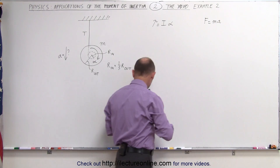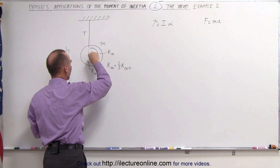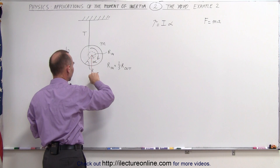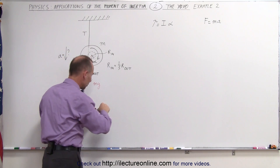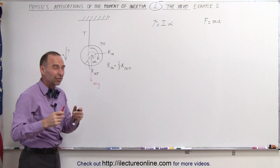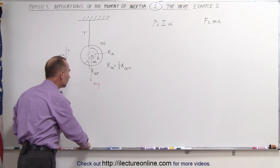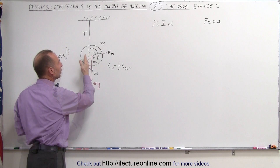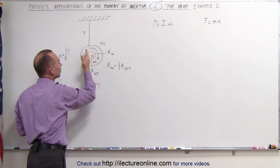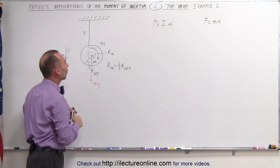The weight of the yo-yo will be pulling it down, so acting on the center of mass of the yo-yo we have mg, and that will cause the acceleration downward. It's actually a combination of the tension and the weight of the yo-yo. The torque can be calculated by taking the tension multiplied by the radius over which it acts, that is r_inner.